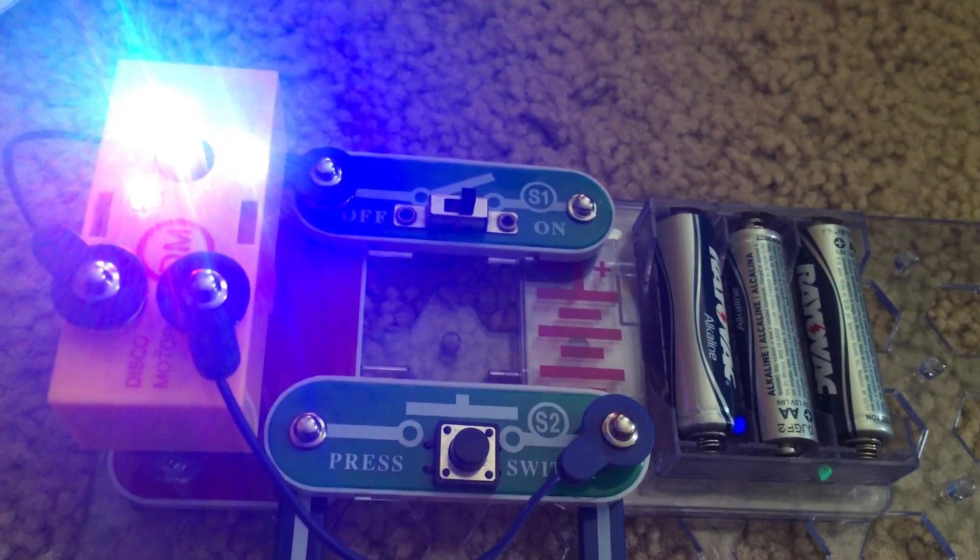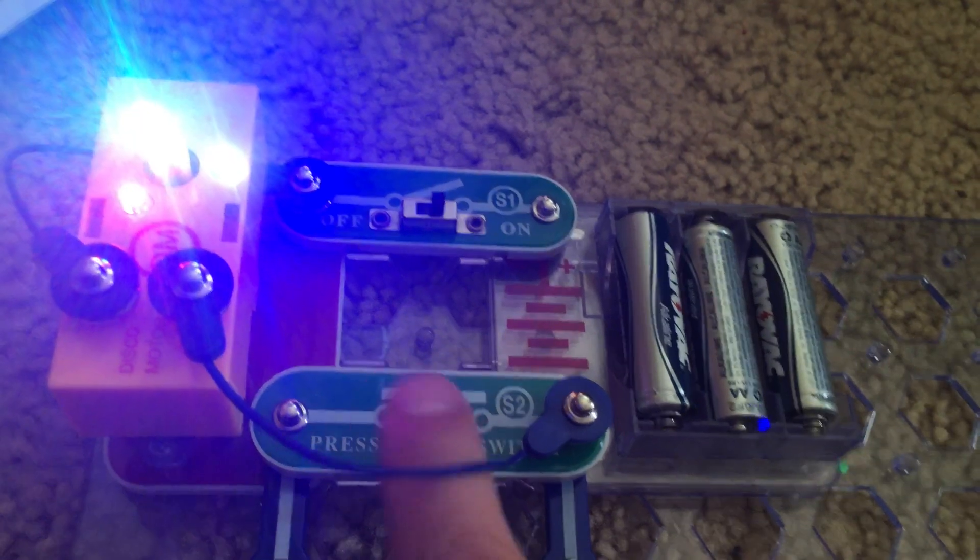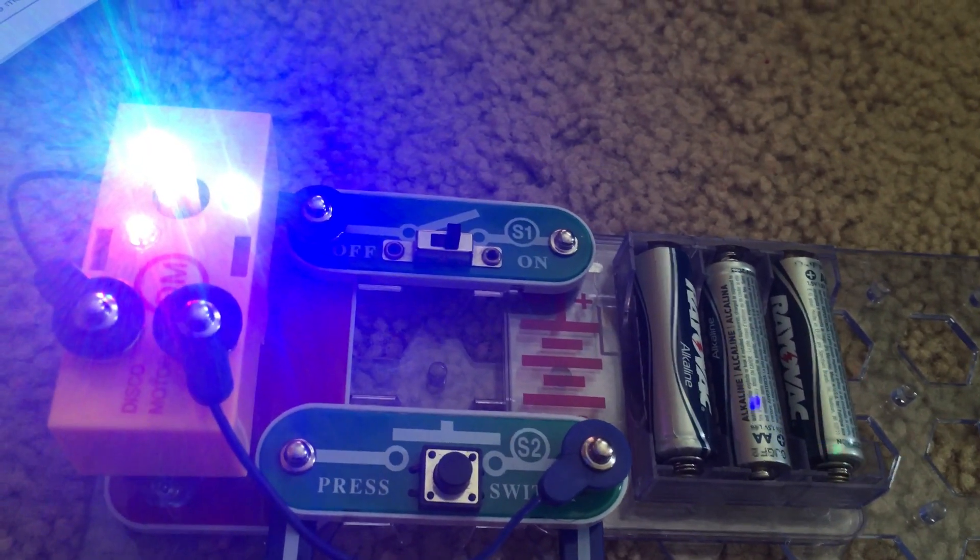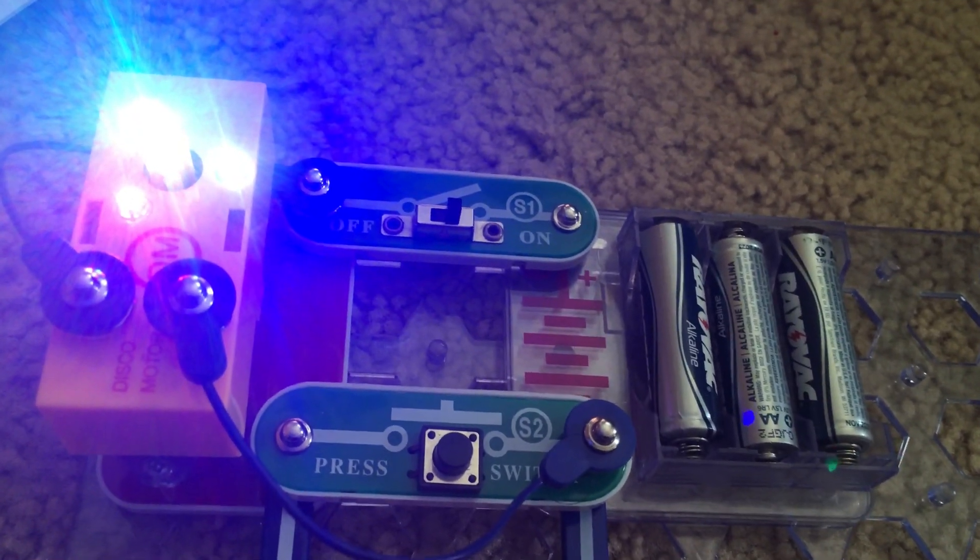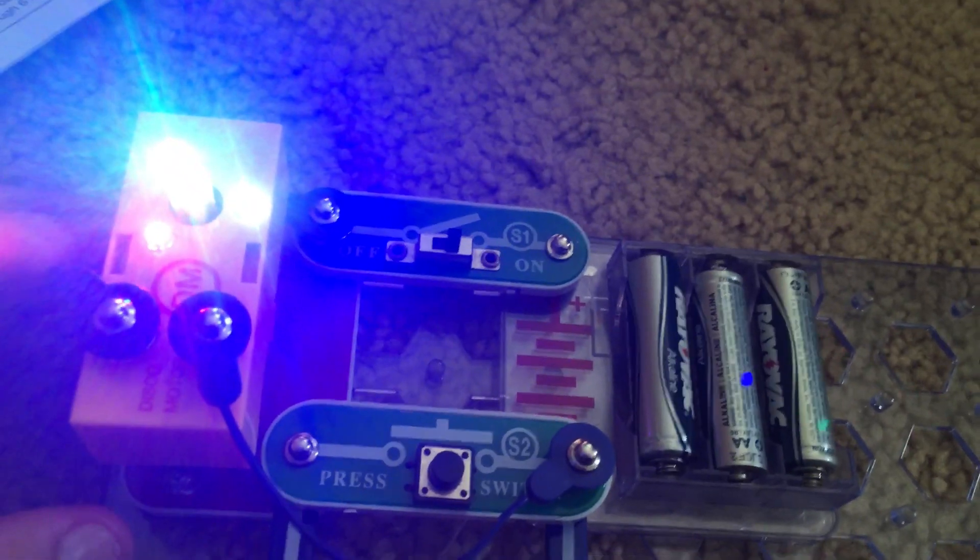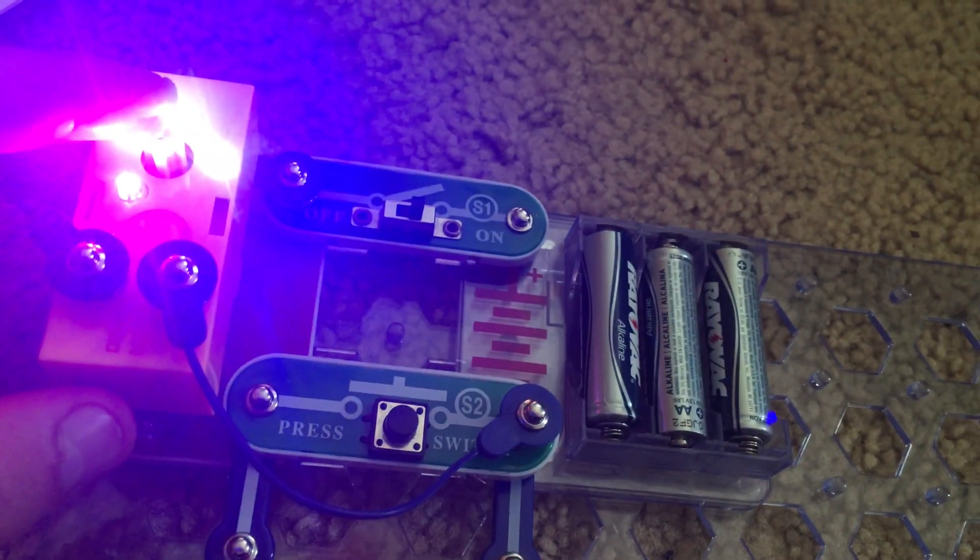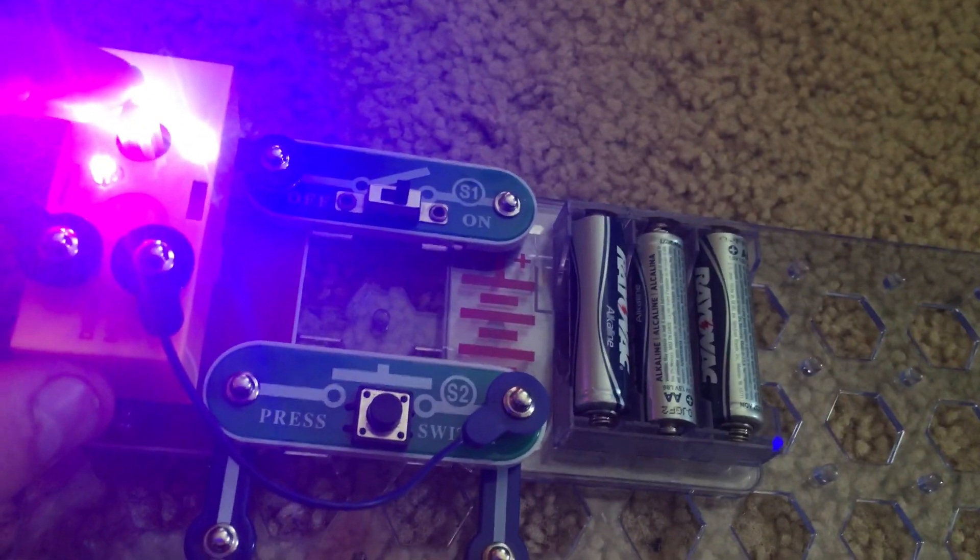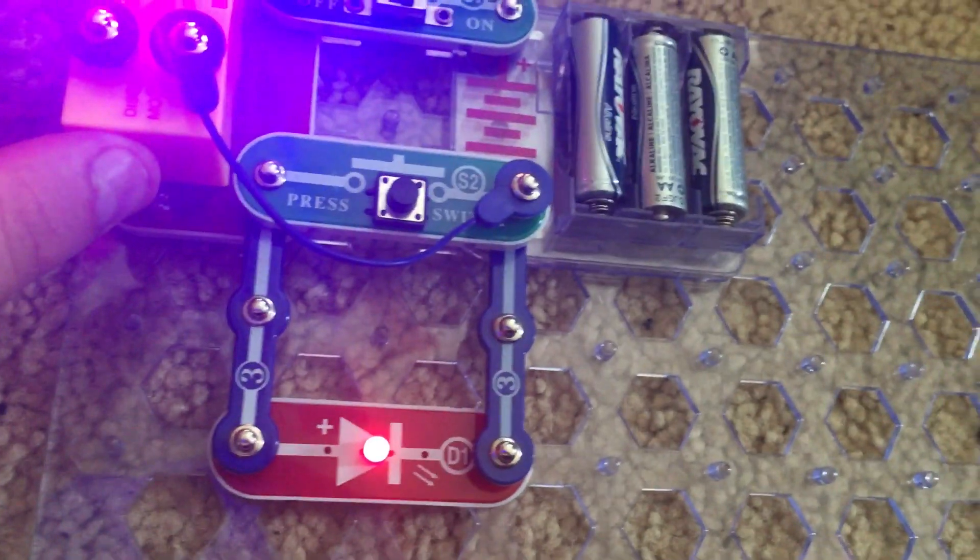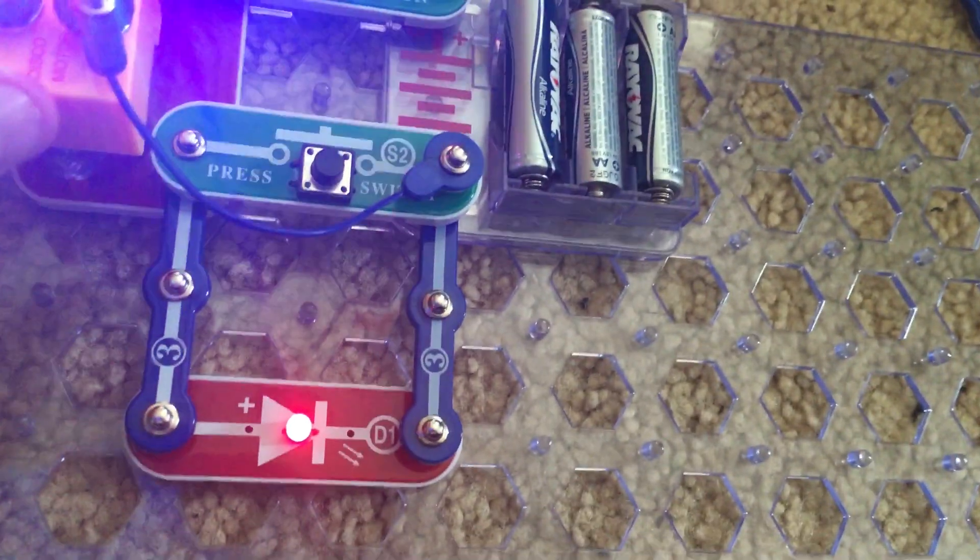The LEDs all light up, but the motor does not spin. Push the press switch, and you will have a very slow spinning motor. The reason why it does not spin at full speed and requires you to hold down the press switch is because the red LED is limiting the current to the disco motor.